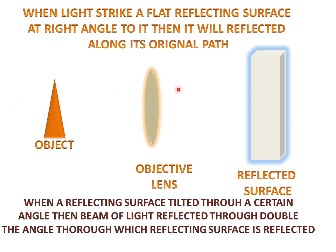When light will strike on the reflecting surface, when it is at right angle, then light will travel the same path or original path. When this surface is tilted, then light will travel the two theta angle or double the angle by the reflecting surface.